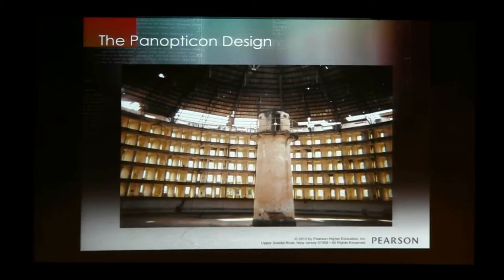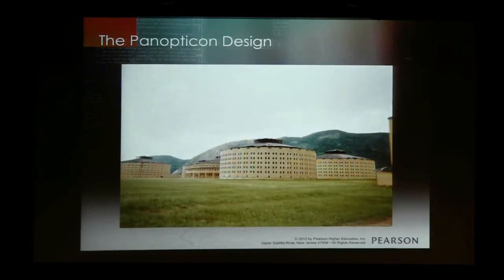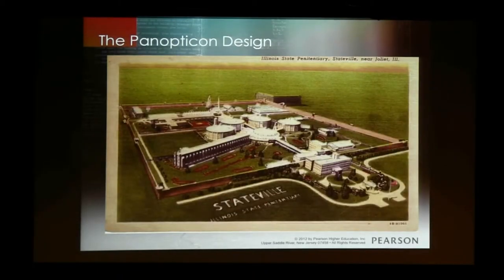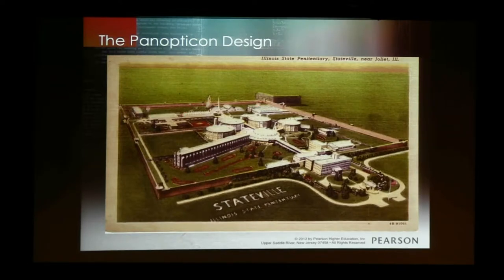This is an actual picture of a panopticon design — a hollowed-out circular structure with a guard tower and old cells. This design never really took off in the U.S. The only place it was built is Statesville in Joliet, Illinois — the only place in our country with these circular housing units. Coincidentally, it's one of the worst-run prisons in our country, largely because that particular design didn't really work.